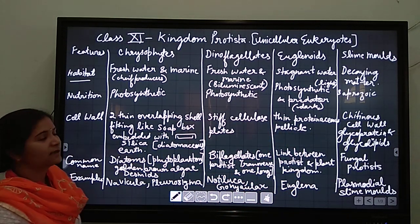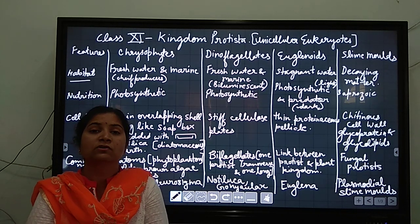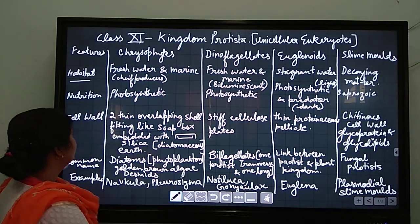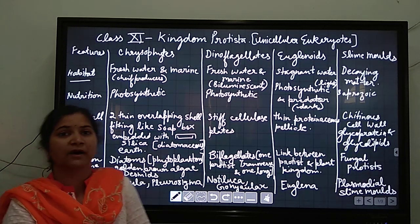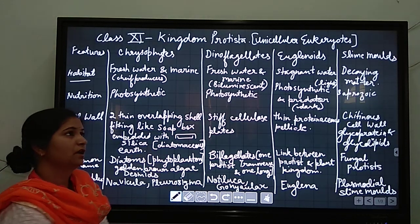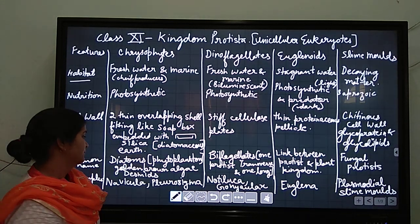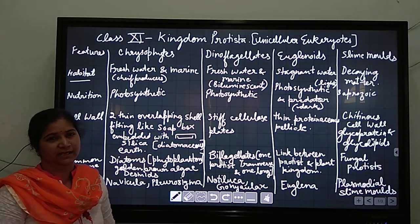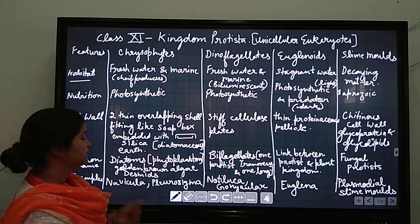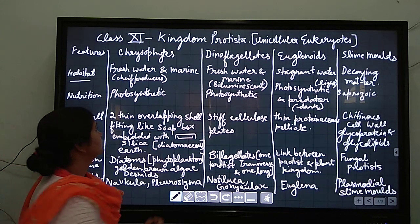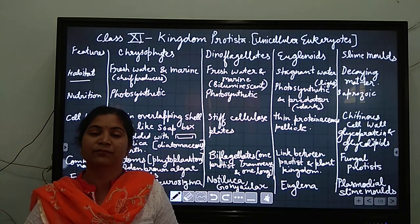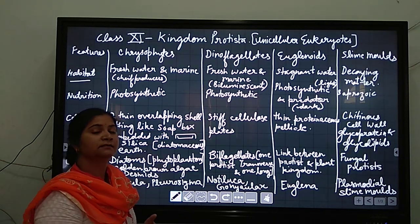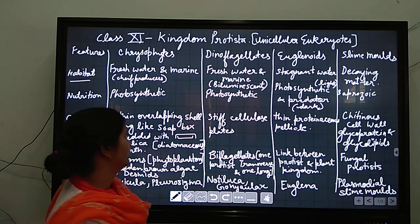Now nutrition. The chrysophytes are also given the name of diatoms and they are photosynthetic organisms because they have pigments. They are also called golden brown algae of oceans. They are also known as desmids. Therefore they are photosynthetic in their nutrition because they have pigments and can synthesize their food.